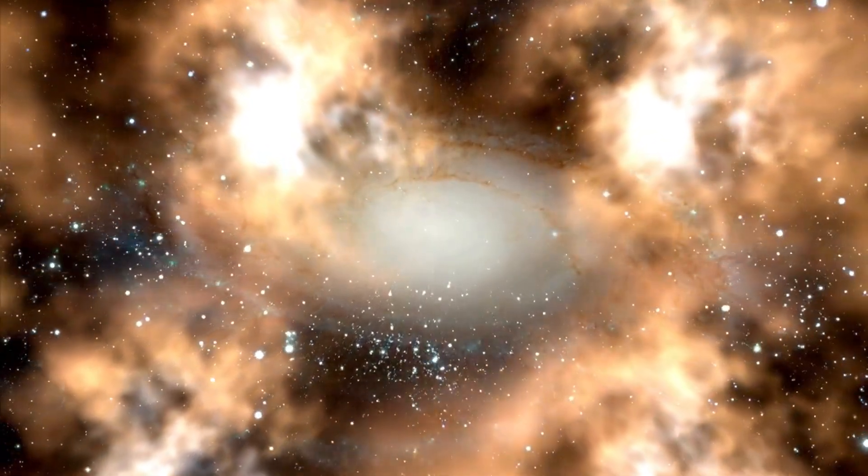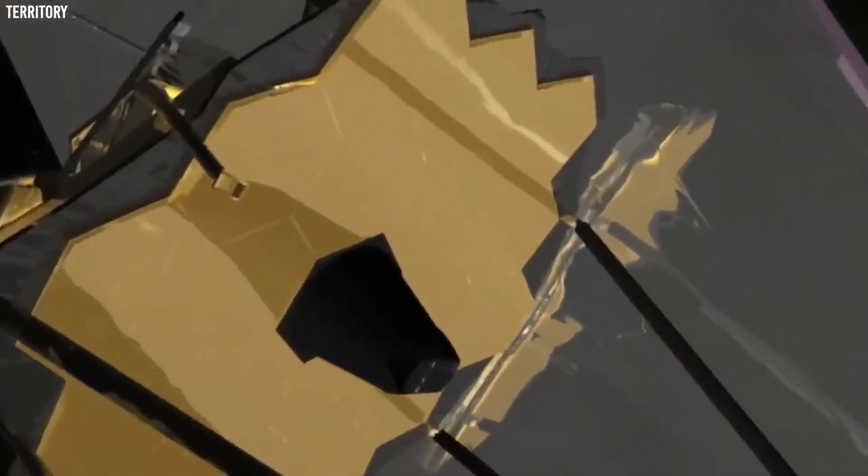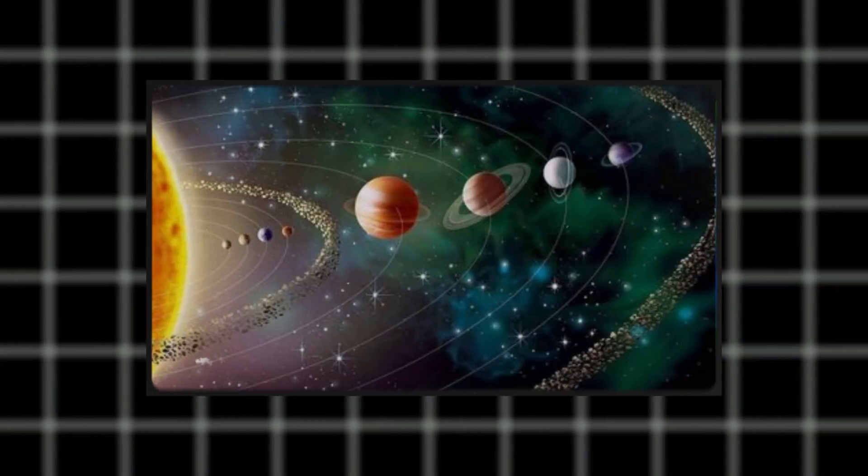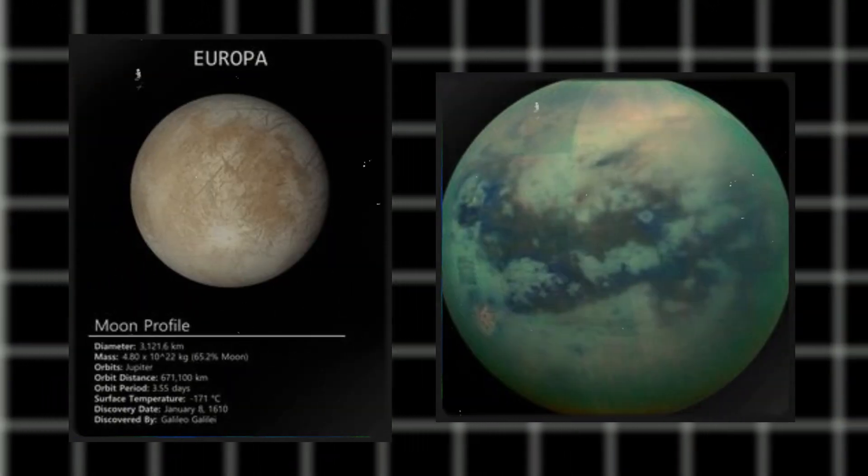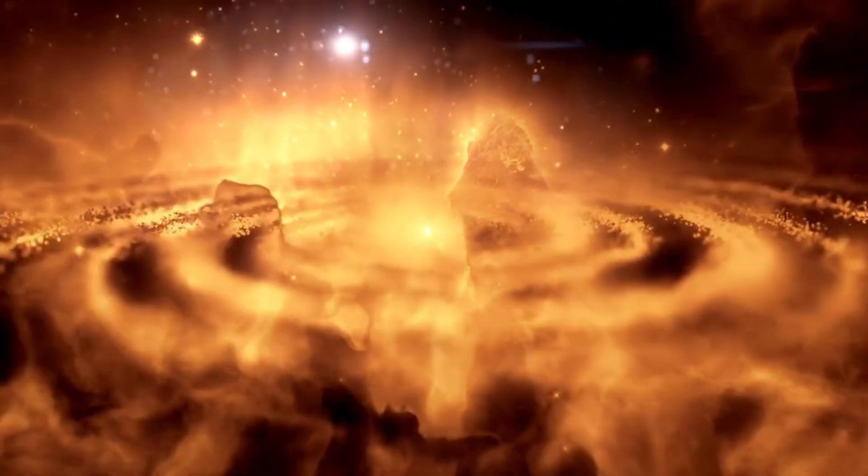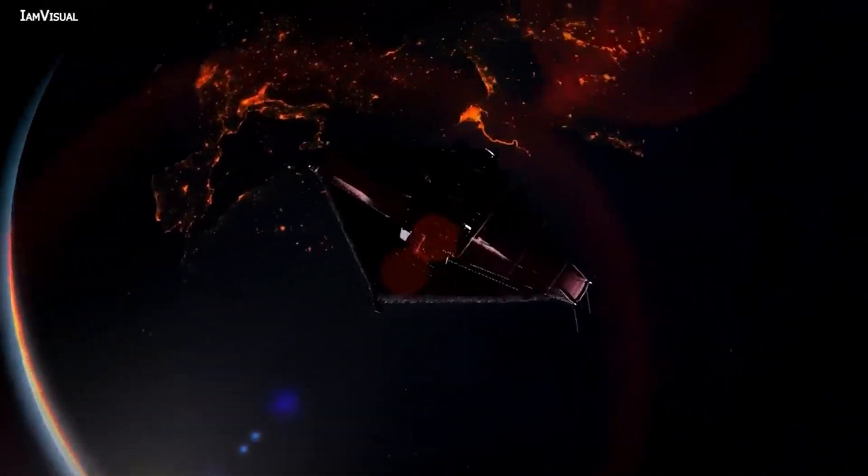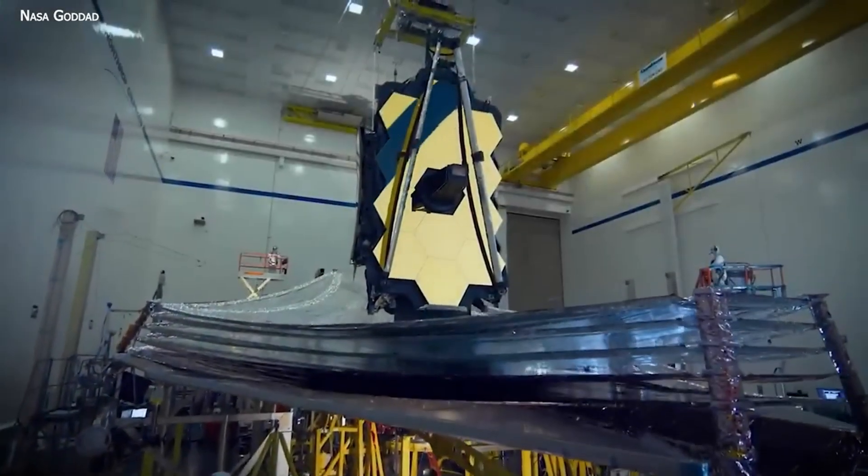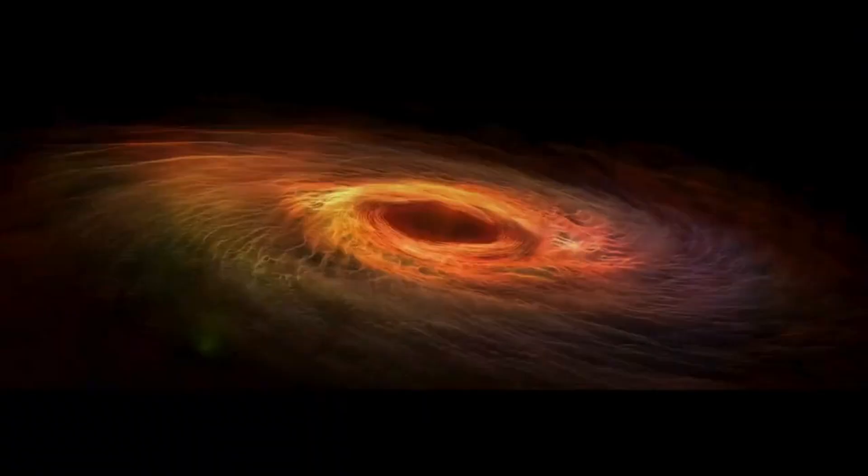But wait, there's even more. The Webb is not just about gazing into the past. It's also going to keep an eye on our own solar system. It'll be checking out neighbors like Mars, Saturn, and even the icy moons like Europa and Titan. Who knows what secrets it might uncover, maybe clues to life or the origins of our solar system itself. In short, the Webb is not just a telescope. It's a time machine, a detective, and a space explorer rolled into one. It's going to keep blowing our minds with images and data from the farthest corners of the universe.